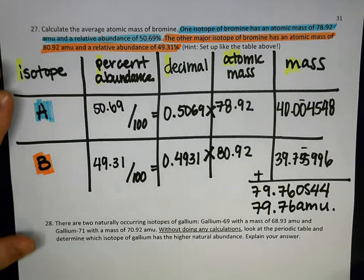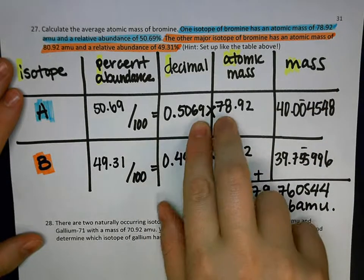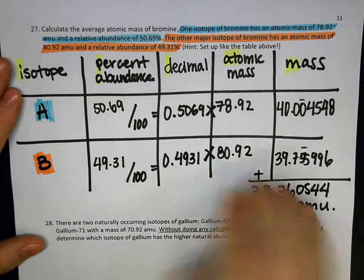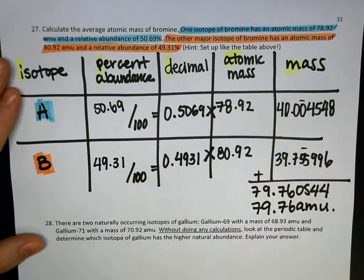The other way to do this is with the formula, but it's basically the same steps. You multiply these guys together, get your answer, and then add them up. You can remember, I passed Denny's at midnight, and that'll help you set up your table.